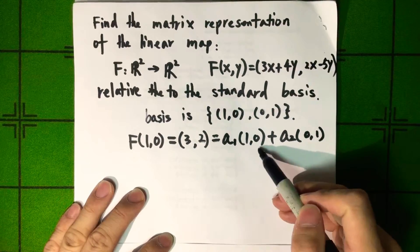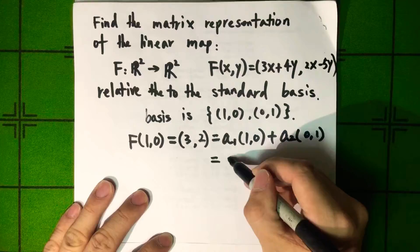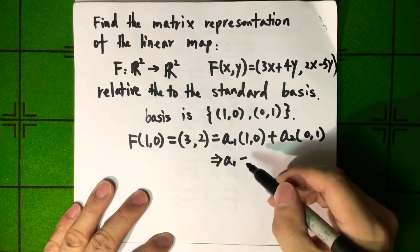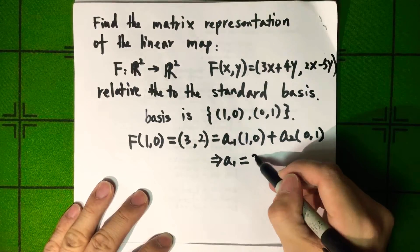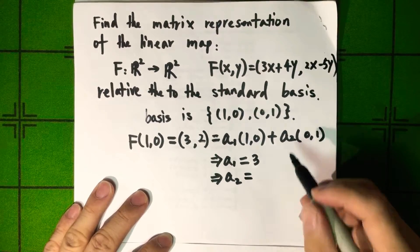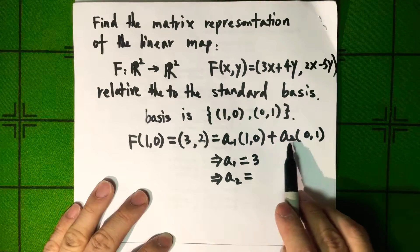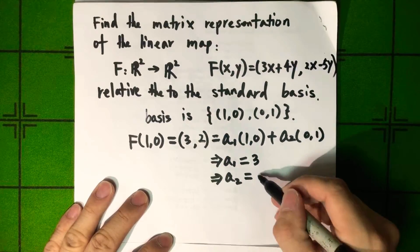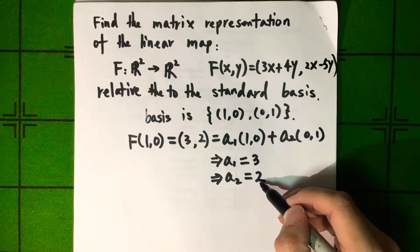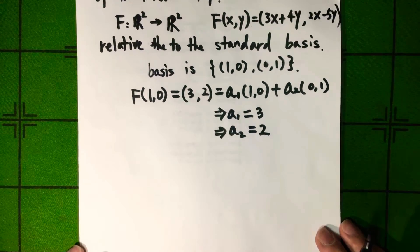Notice that (1, 0) and (0, 1) is also a basis of R2. So from here we get A1 is equal to 3. And A2 is equal to A1 times 0 plus A2 times 1 is equal to 2. That means A2 is equal to 2. So now we can write 3 and 2 as the column component of the matrix.